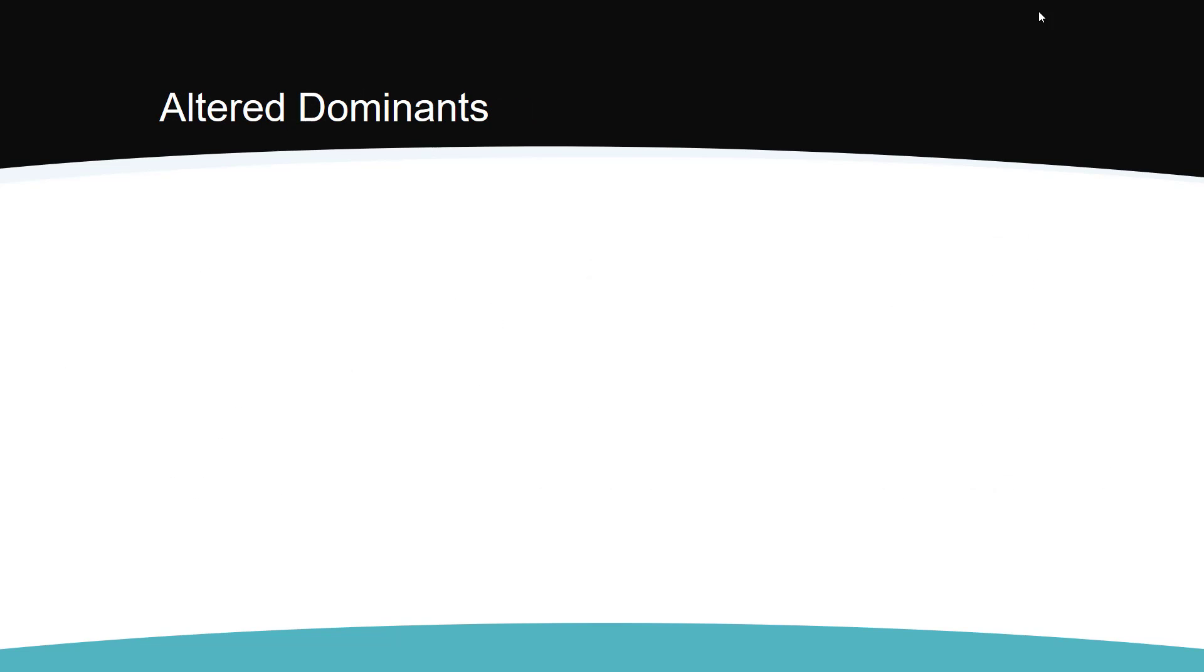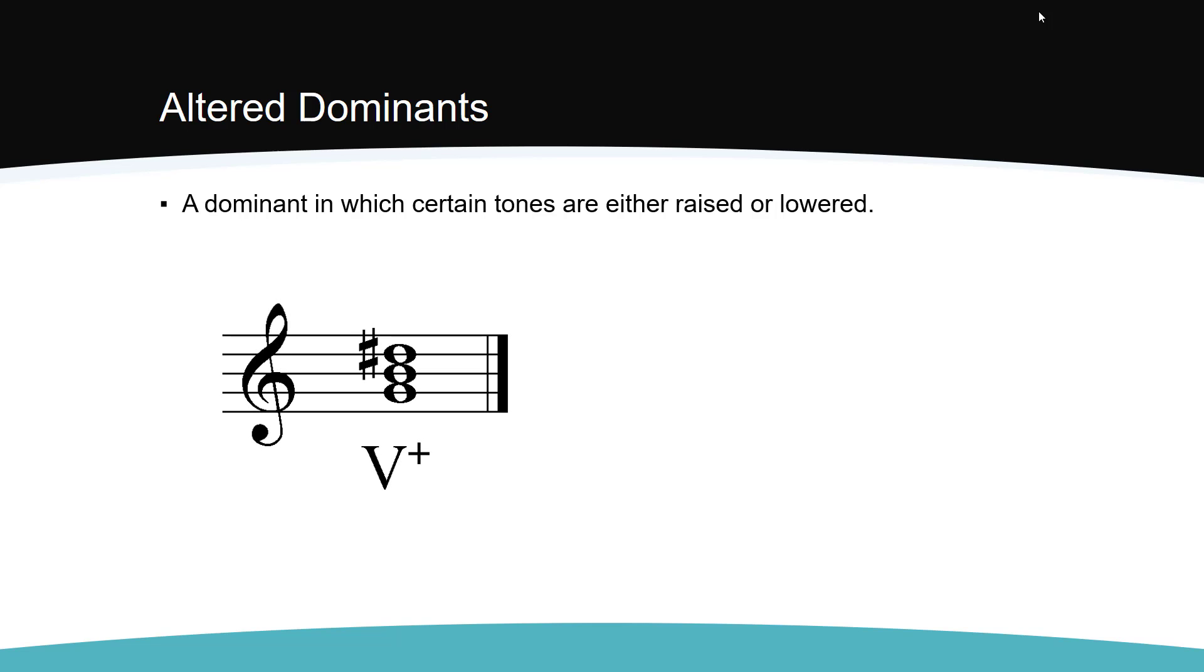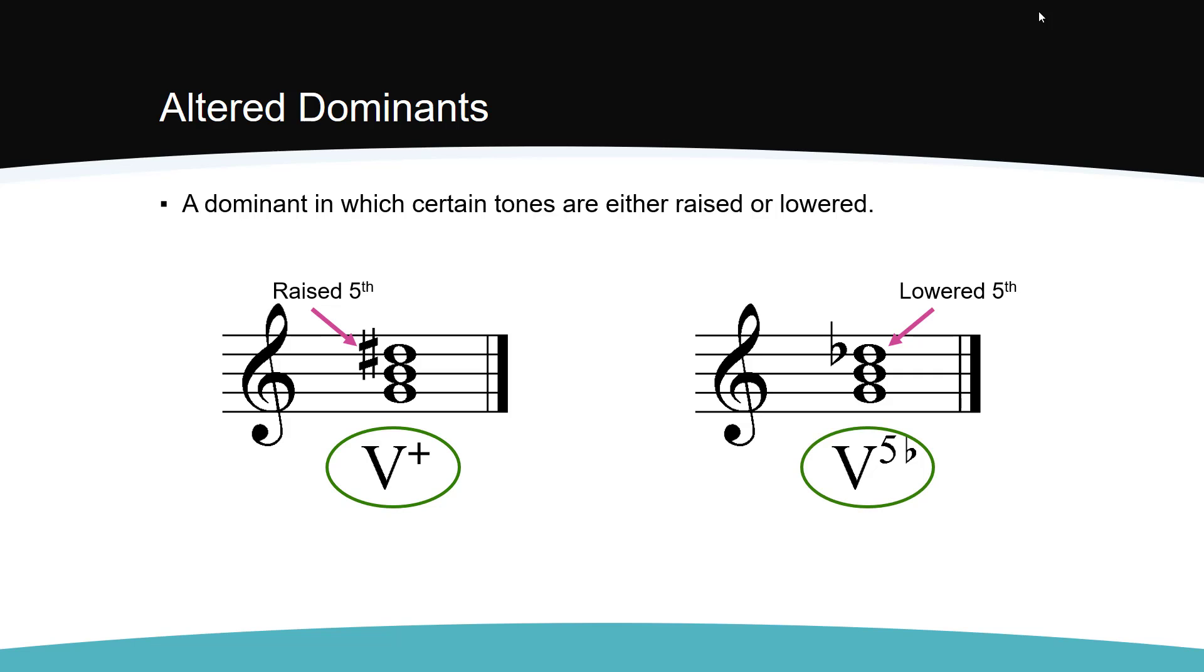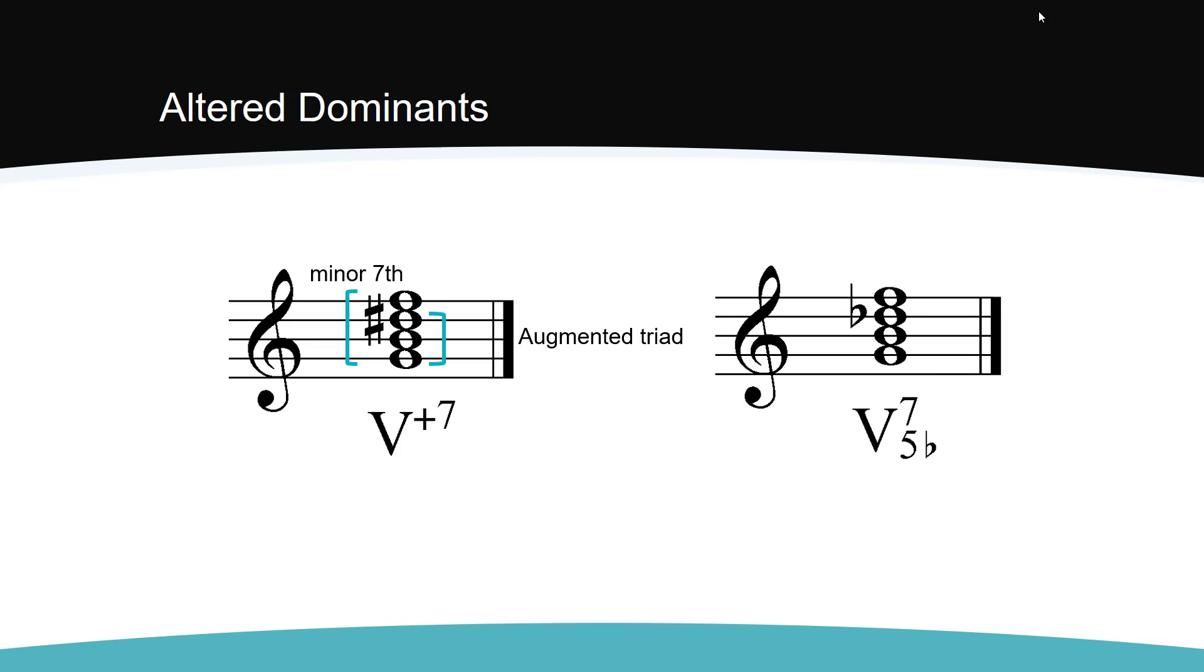The next topic is the altered dominant. When dominant triads are altered, the 5th of the chord is raised or lowered. A dominant triad that has been altered can become an augmented dominant, or a dominant with a major 3rd and a diminished 5th. The Roman numerals are written like this. We can also alter a dominant 7th chord. When we raise the 5th, we create a dominant harmony with an augmented triad and a minor 7th. When we lower the 5th, we create a chord with a major 3rd, diminished 5th, and a minor 7th.